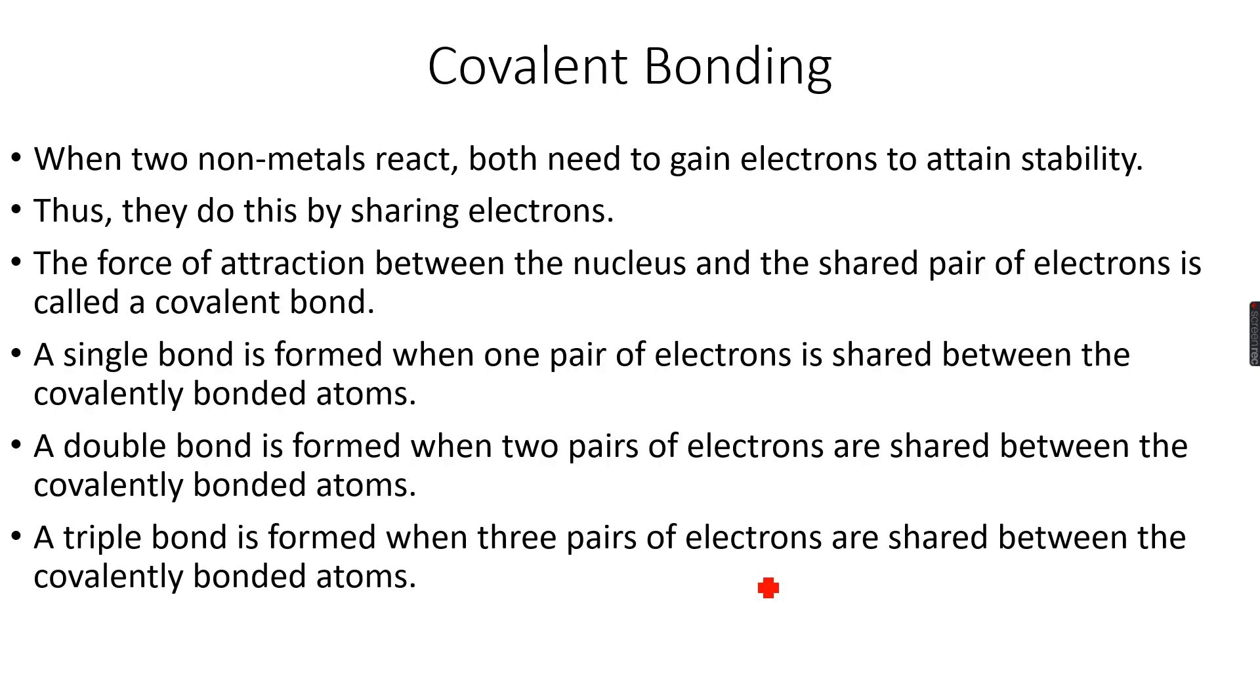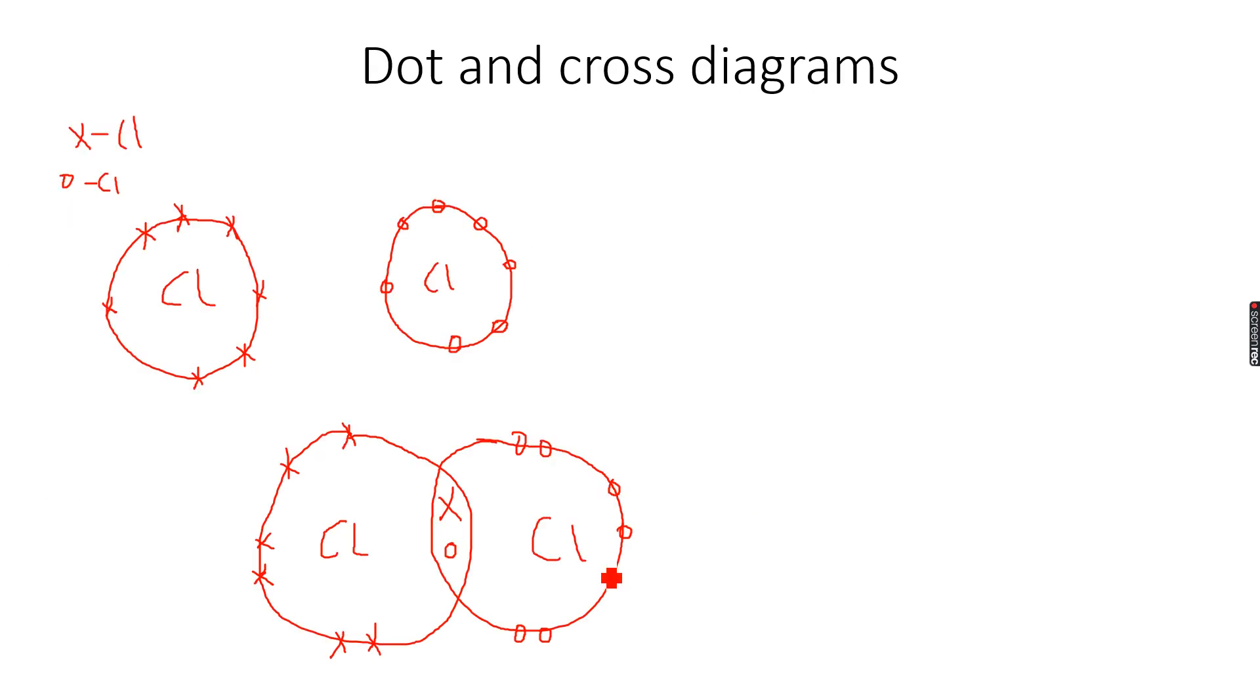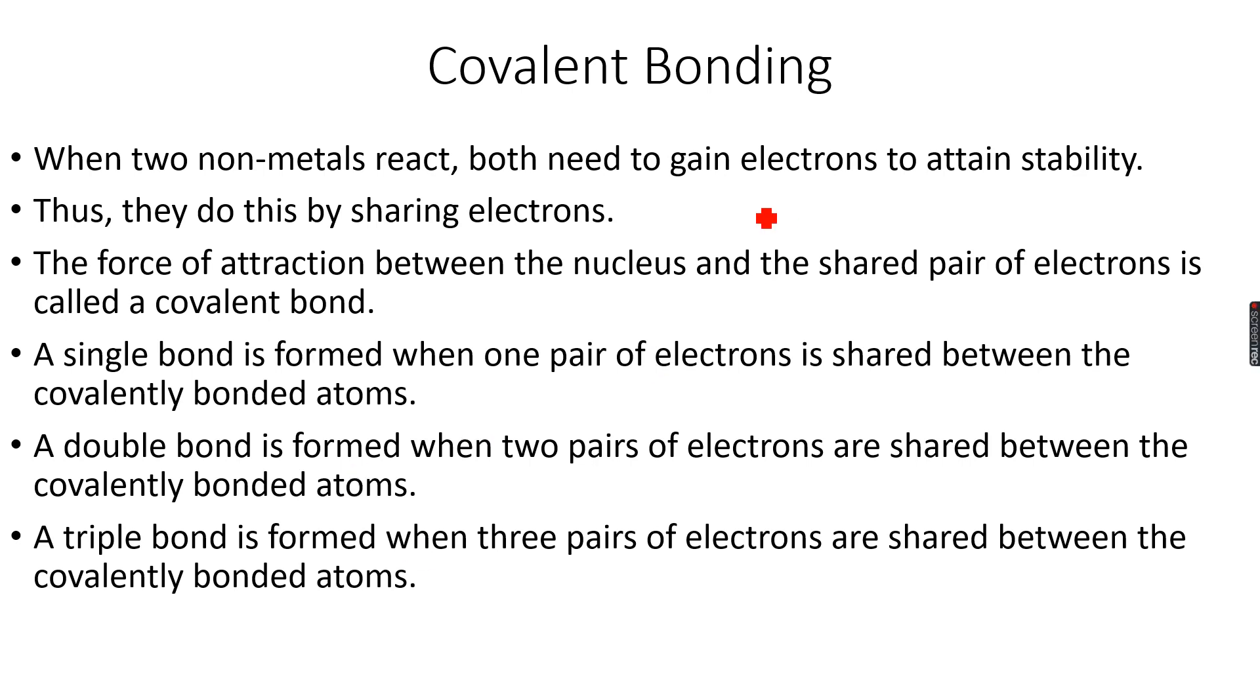So basically a covalent bond is the force of attraction between the nuclei, because there will be a nucleus in each of the atoms, and the bonded pair of electrons. This is called the bonded pair of electrons. So the force of attraction between the nucleus and the shared pair or the bonded pair of electrons.